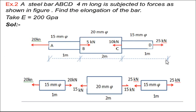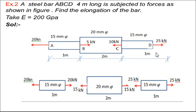Next problem: A steel bar ABCD, 4 meters long, is subjected to forces as shown in the figure. Find the elongation of the bar, meaning the change in length. Modulus of elasticity is 200 GPa. This total ABCD bar has a varying cross-section, so we again divide it into three segments.